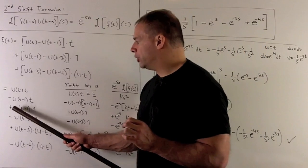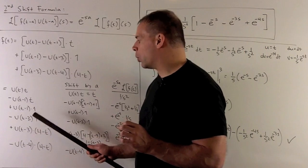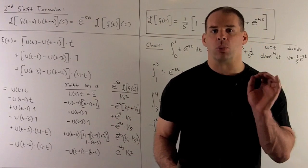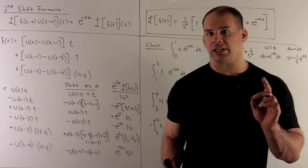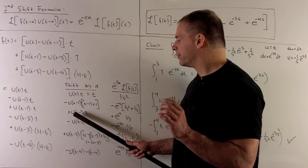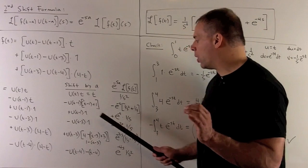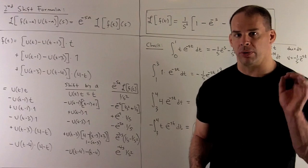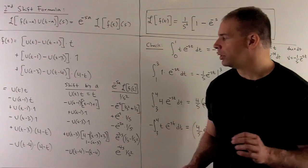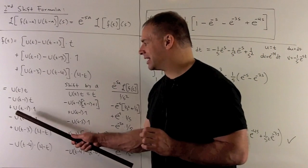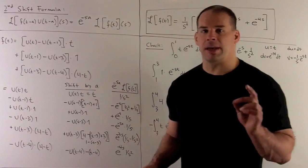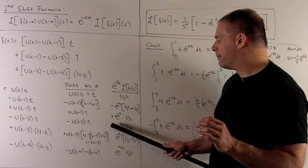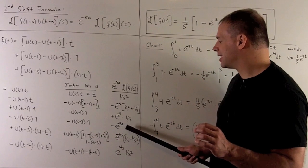For the term minus u(t minus 3) times 1, same idea but a equals 3, giving minus e to the minus 3s times 1 over s.